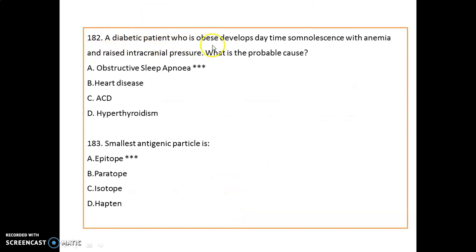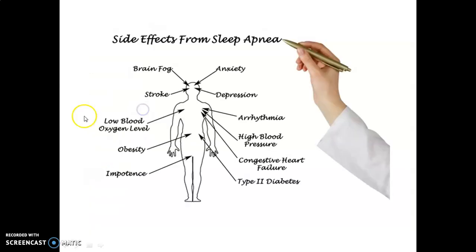A diabetic obese patient developed daytime somnolence with anemia and raised intracranial pressure. The probable cause is obstructive sleep apnea. The smallest antigenic particle is an epitope. Important side effects of sleep apnea include brain fog, stroke, low blood oxygen level, obesity, anxiety, depression, arrhythmia, high blood pressure, congestive heart failure, and type 2 diabetes.